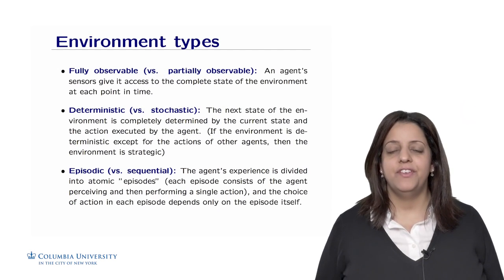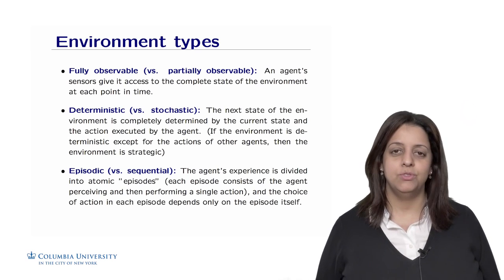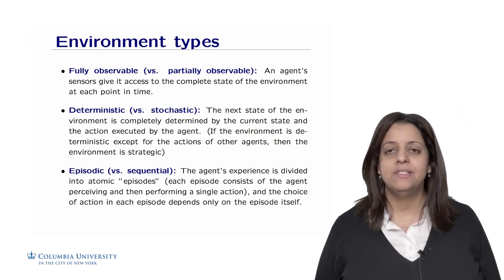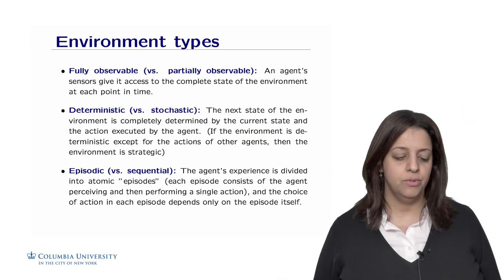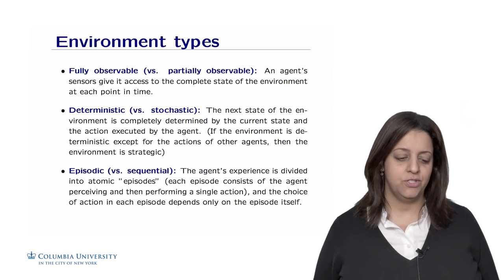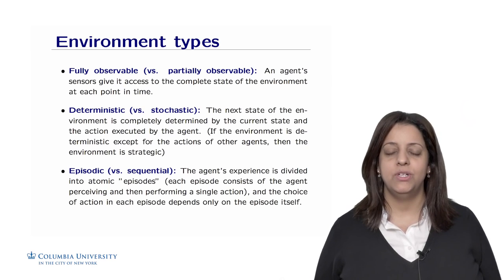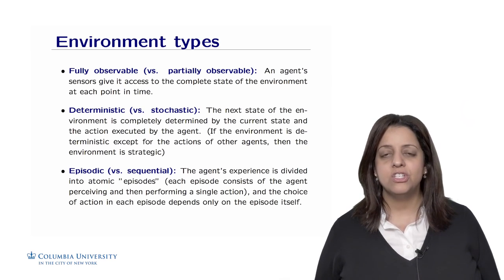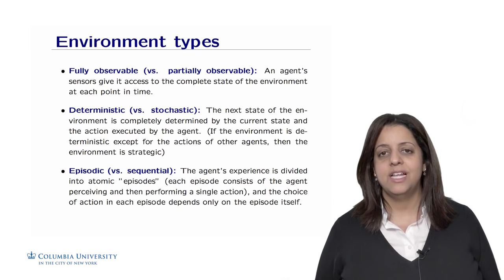So we have seen two examples of agents with two examples of environments: the street and the room. We could actually categorize environments into different types. This includes whether the environment is fully observable, in which an agent's sensors give it access to the full picture, that is the complete state of the environment at each point in time. This is versus partially observable, such as the self-driving car that does not have access, for example, to what's going on three blocks away or what's going on behind the truck.